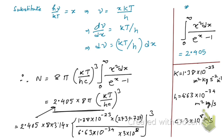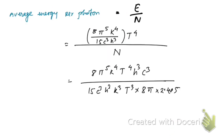Now we cancel common terms: h³ cancels h³, k³ cancels with k⁴ to leave just k, T³ cancels with T⁴ to leave just T, 8π cancels with 8π⁵ to leave π⁴, and c³ cancels c³. We are left with π⁴ / (15 × 2.405) times kT.